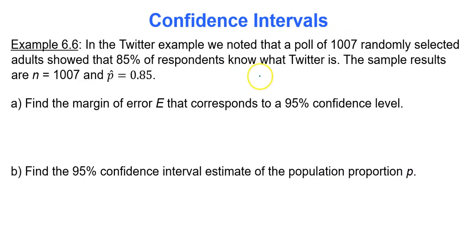In the Twitter example we noted that a poll of 1007 randomly selected adults showed that 85% of respondents know what Twitter is. The sample results are n = 1007 and p-hat = 0.85. That's going to be the starting point of our confidence interval. The first thing they want you to do officially is to find the margin of error E that corresponds to a 95% confidence level.